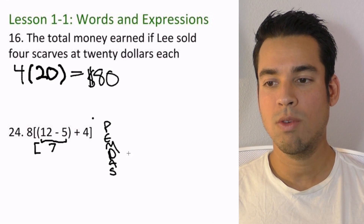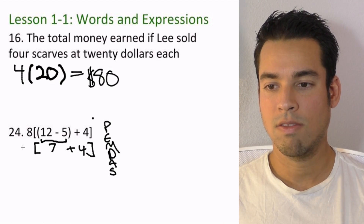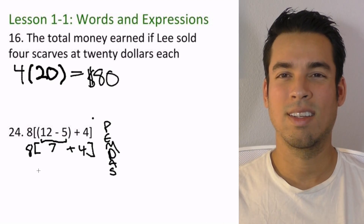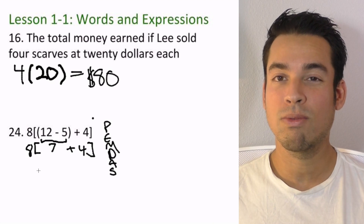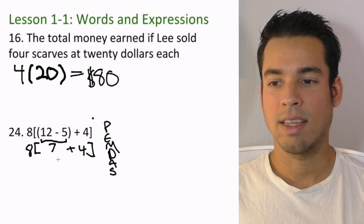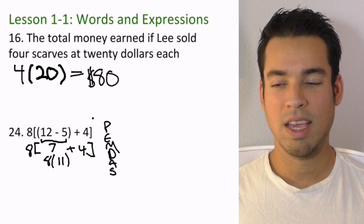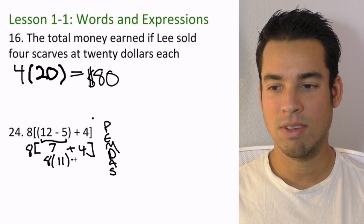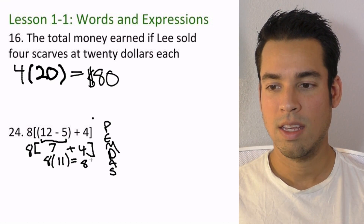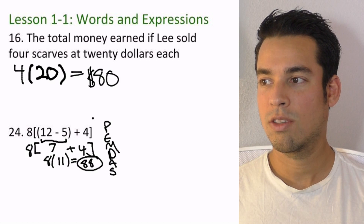We've evaluated the innermost parentheses, but we still have 7 plus 4 within an external pair of parentheses, so we evaluate that next. 7 plus 4 gives us 11. Now we have 8 on the outside multiplying in, and then we do the final multiplication. 8 times 11 is 88 — and that's our answer for number 24.